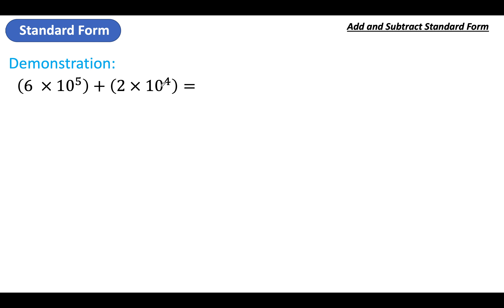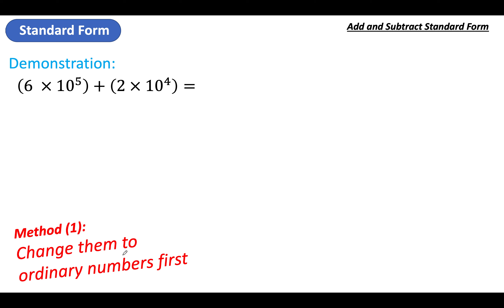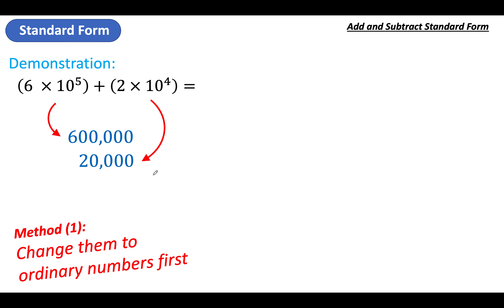I'm adding another number to that — it's basically just adding two numbers together, that's all it is. There are two ways you can do this. I'm going to show you both, but we'll use the second one. The first one is quite handy because it demonstrates a bit of a problem. Method one is just change them to ordinary numbers first. So my six times ten to the power of five would really be 600,000, and my two times ten to the power of four would be 20,000. This method is perfectly valid and works fine, so if you find the other one tricky you can use this one — though the other one is a lot more efficient.